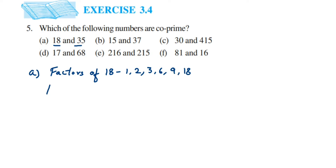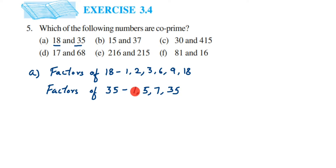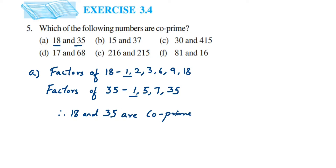Next, factors of 35. 35 goes in only a few tables: 1, since the number ends with 5 it goes in the 5 table — we know five sevens are 35 — it goes in the 7 table, and then directly in the 35 table. You don't find any number common between 18 and 35 except 1. So the common factor is only 1, and therefore 18 and 35 are co-prime.